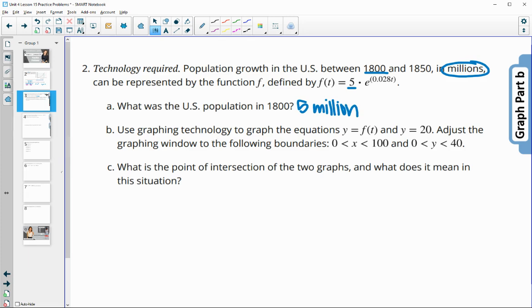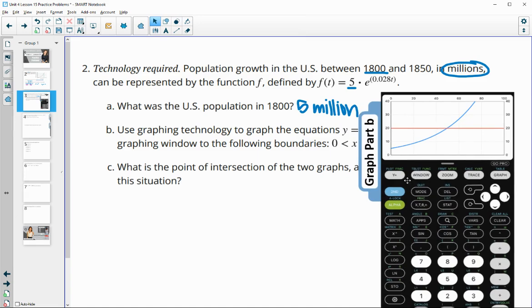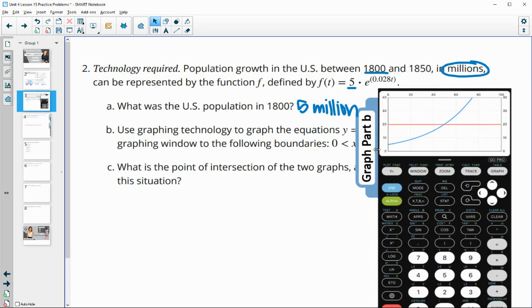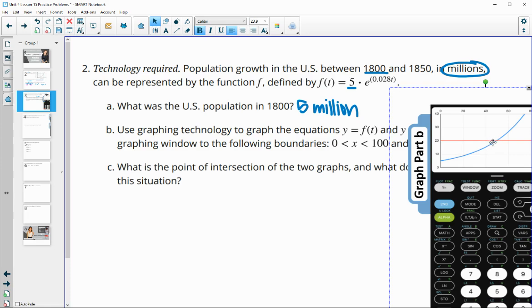Part B says use graphing technology to graph the equations f of t, which is 5 times e to the 0.028t, and y equals 20. And then it wants you to adjust your graphing window to these boundaries. So I've gone ahead and done that. And so if you need to change your boundaries, you would go and click window, and then you can change your x min, x max, y min, y max to these values that they asked for. So you can see that I've got an x min of 0 up to 100, and then the y value is going from 0 to 40. So then it wanted us to find what this point of intersection is.